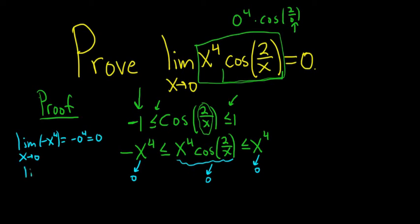Now we do the same thing for the right-hand side. Limit as x approaches 0 of x to the 4th, that's equal to 0 to the 4th, that's equal to 0.